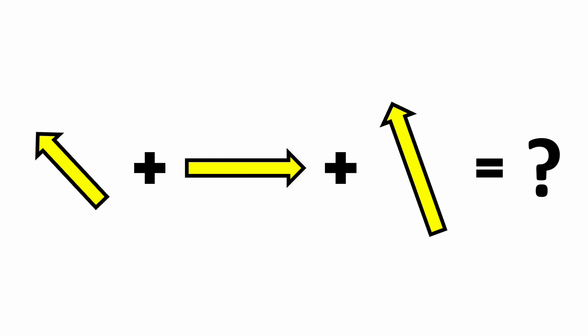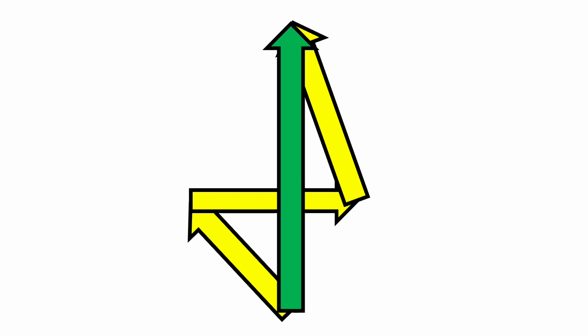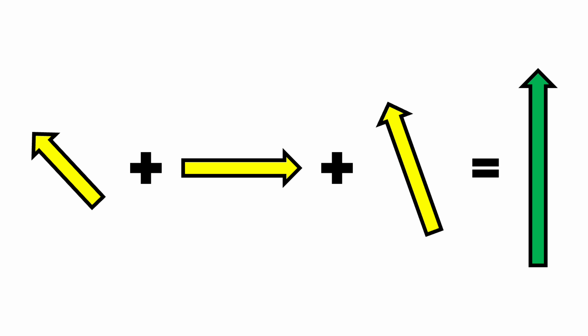Another property of vectors that will be important in this video is that they can be added together or broken apart to create new vectors. To add multiple vectors together, simply connect them so that the tip of one vector touches the tail of the next. The final vector can be found by drawing a new vector from the tail of the first to the tip of the last. This means that the three yellow vectors added together are equivalent to the green vector.